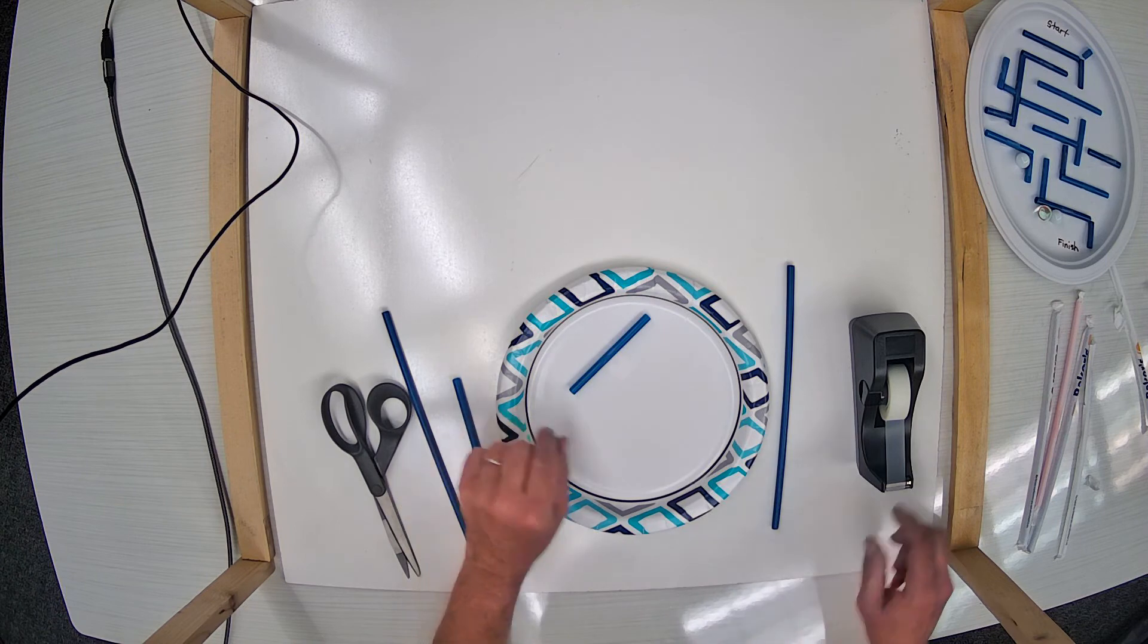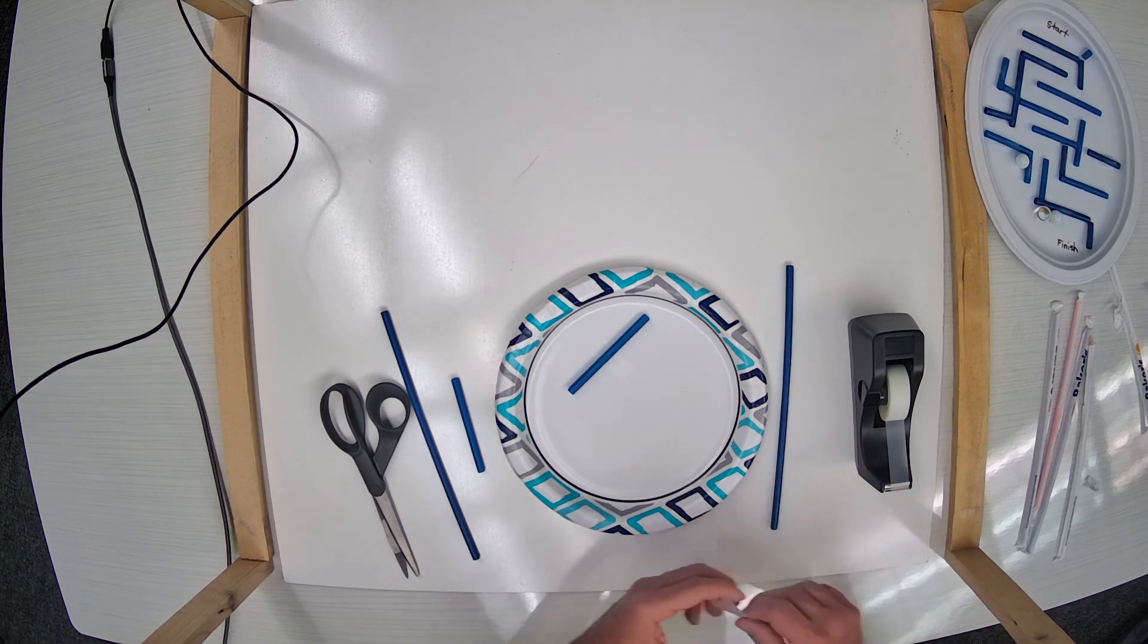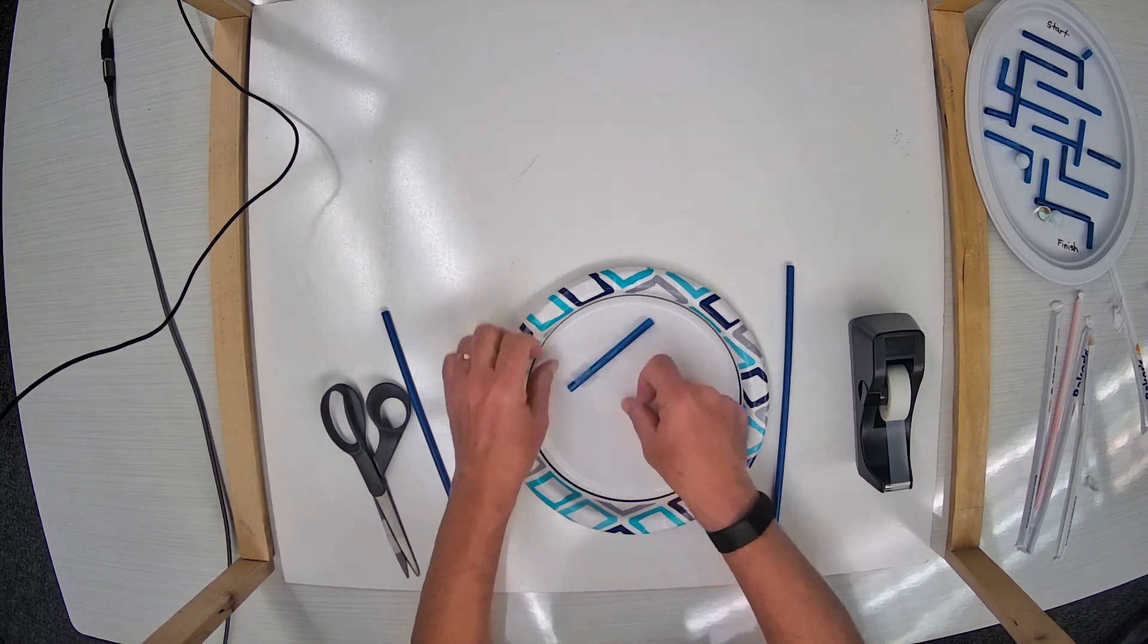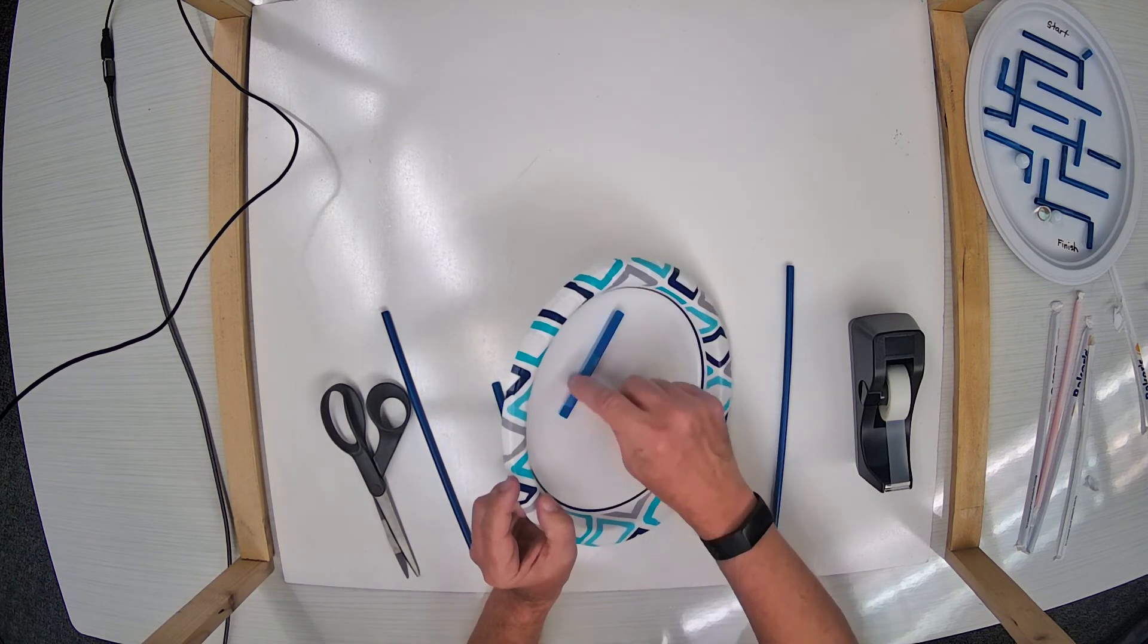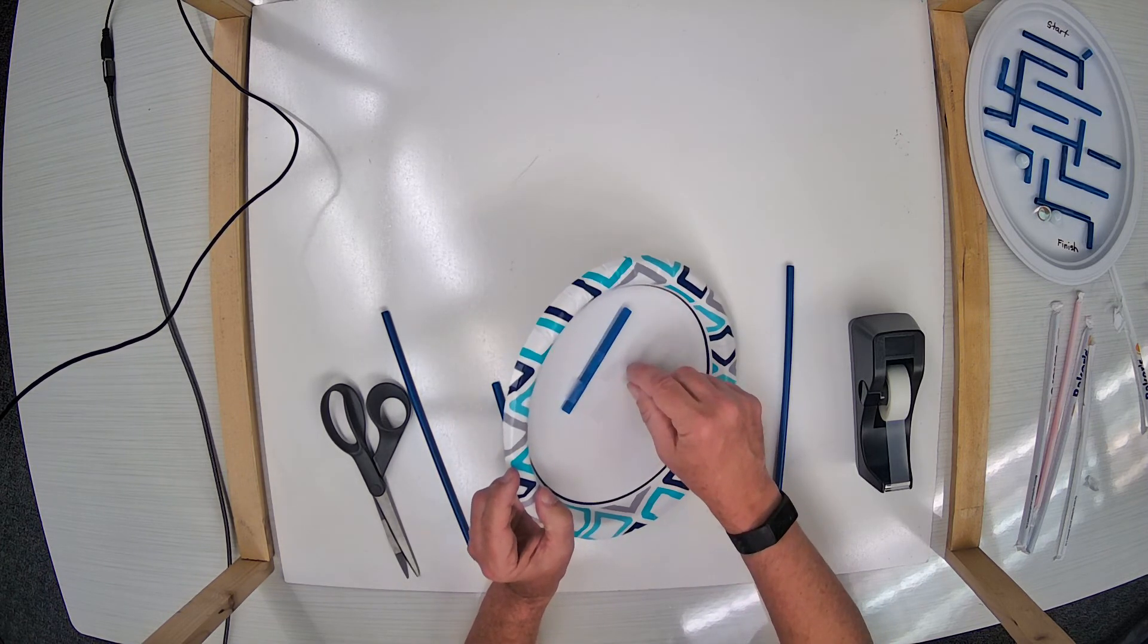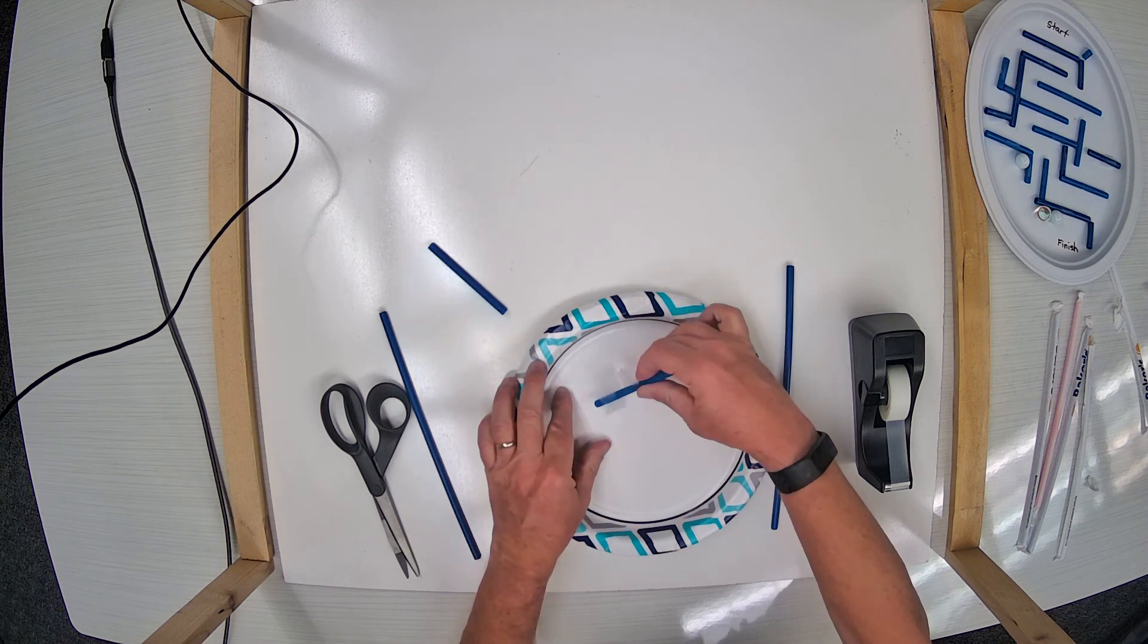That's instead of doing something like this, where if I tape it on like this, then you see how the humps right there make it hard to get past. That's a hint.